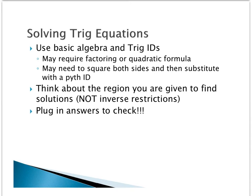When you're solving trig equations, there are a couple different strategies that we will use. We're going to use basic algebra and trig identities like we did back in Chapter 5. All of those skills that we learned will be very helpful in Chapter 6. We will do things such as factoring or using quadratic formula. At times, we might square both sides and substitute with a Pythagorean identity.